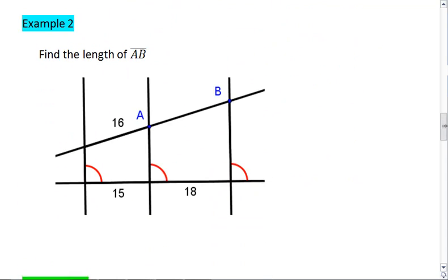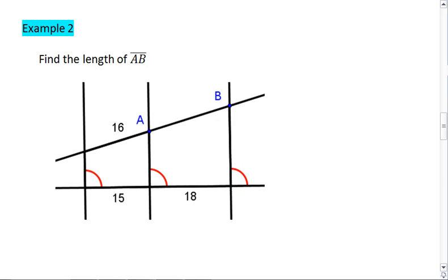Let's apply this to a problem. In the figure below find the length of AB. Well since we have all of these corresponding angles are congruent, that means we have three parallel lines. And this is the converse to the corresponding angle postulate.